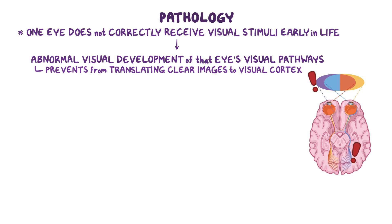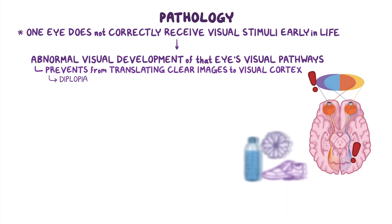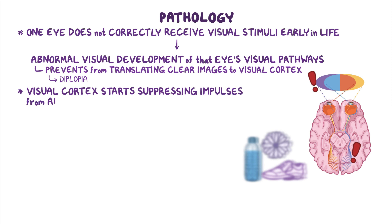As a result, the visual cortex is not able to fuse these images with the correct images from the unaffected eye, which can cause diplopia or double vision. To avoid diplopia, the visual cortex starts suppressing the impulses coming from the affected eye.